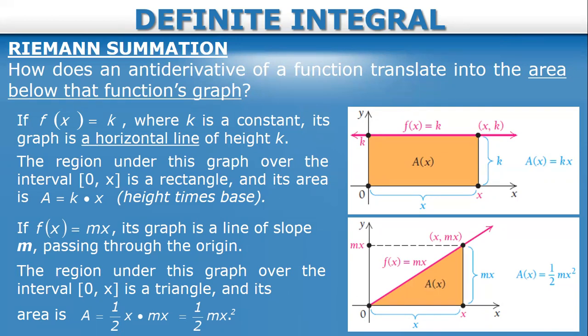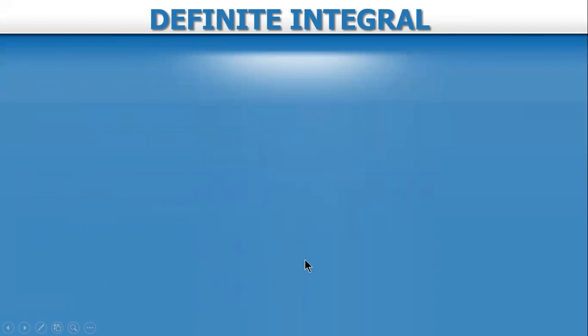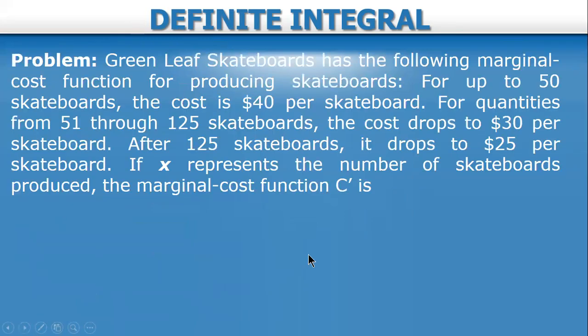Our concern now is: what about curves — not lines, but curves? How do you get the area, or the area bounded by two curves? Here is a simple example. Green Leaf Skateboards has the following marginal cost function for producing skateboards: for up to 50 skateboards, the cost is $40 per skateboard; for quantities from 51 through 125, the cost drops to $30 per skateboard.